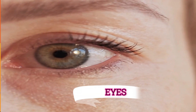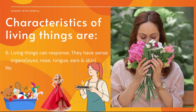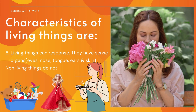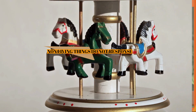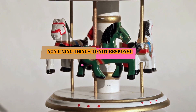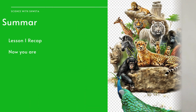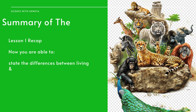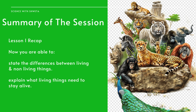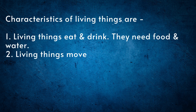The next characteristic is response. Living things have sense organs like eyes, nose, tongue, skin, and ears, due to which they respond to changes in their environment. Non-living things do not feel and are not affected by any changes around them. These are the characteristic features of living and non-living things, which allow us to distinguish between them.